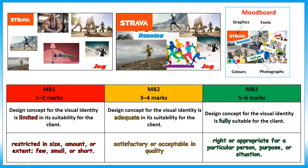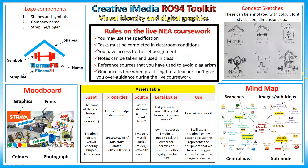That brings us to mood board number three, which is 'fully' suitable and appropriate. You've got a variety of fonts, keywords to do with running, all pictures are appropriate, graphics are appropriate, and you've also got a color palette. So that's a rough guide from mark band one to mark band two to mark band three. If you take the knowledge organiser — this two-sided printed sheet — into your coursework and look at the bottom left hand corner, it gives you a reminder of the key elements for a mood board. Hope you've enjoyed this — get making your mood boards and I'll catch up with you in the next tutorial, thank you for watching.